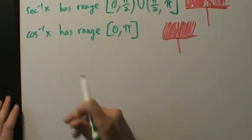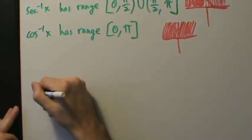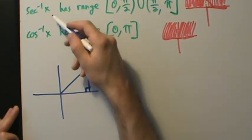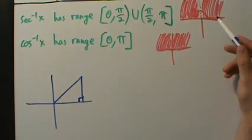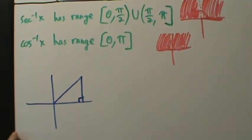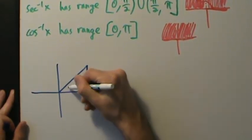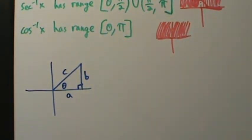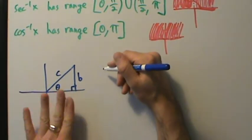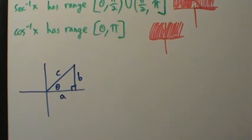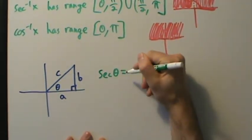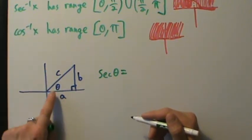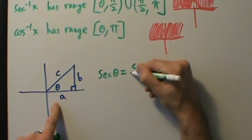Let's draw a right triangle in the first quadrant with coordinate axes. We know inverse secant of x and inverse cosine of x will be in the first quadrant together or in the second quadrant together — they're always in the same quadrant. Let's call this angle theta, and label the sides A, B, and C. Using right triangle trig, the secant of theta is hypotenuse over adjacent, which is C divided by A.